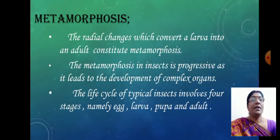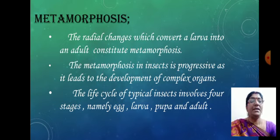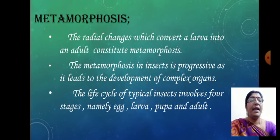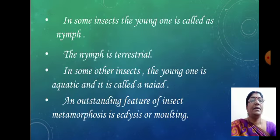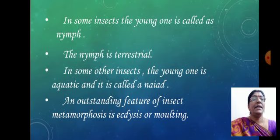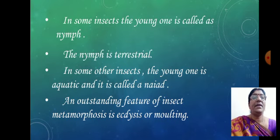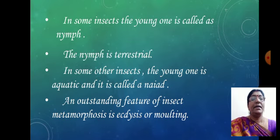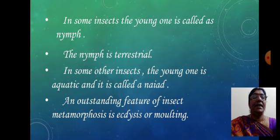The life cycle of a typical insect involves four stages: namely egg, larva, pupa, and adult. In some insects the young one is called a nymph, and normally the nymph is a terrestrial one. In some other insects we call the young one a naiad, which is the stage found in aquatic insects.